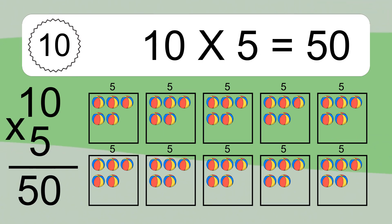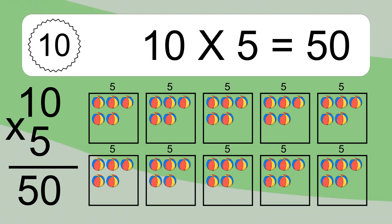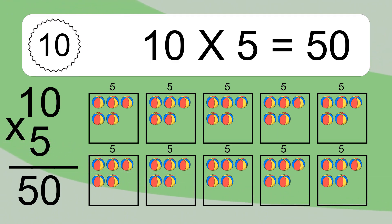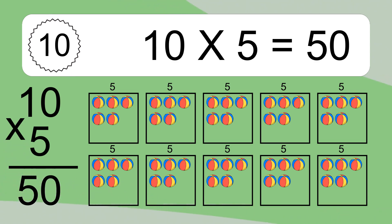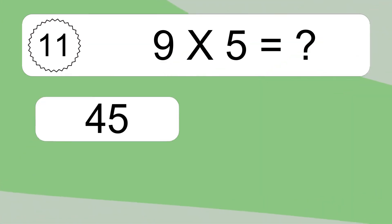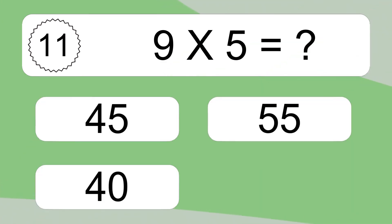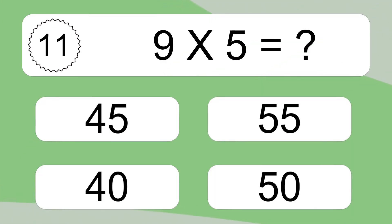We have 10 boxes, and each box has 5 colorful balls inside. If you count all the balls in all the boxes together, you will have 10 times 5 balls. This equals 50 balls. 9 times 5 equals what?